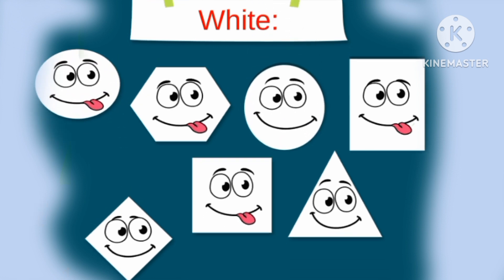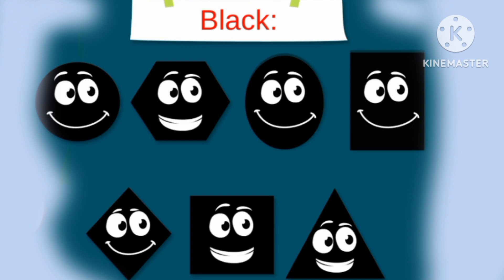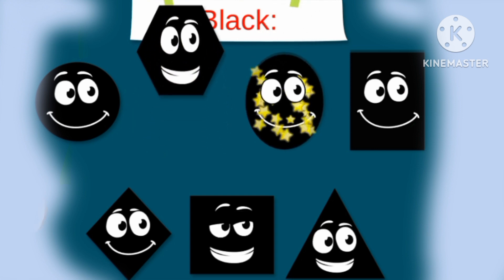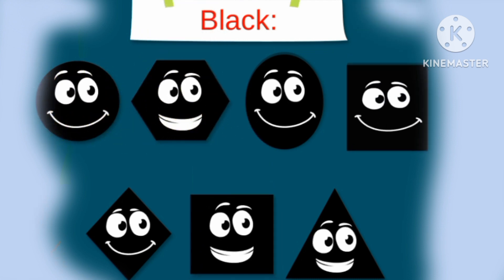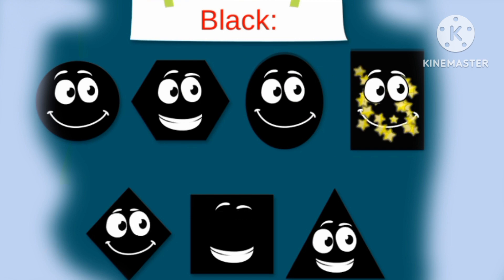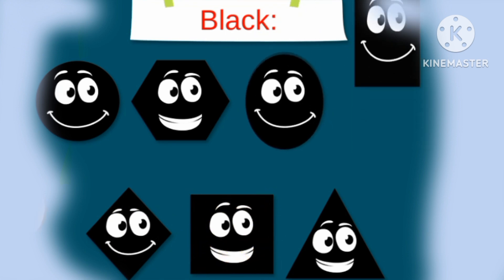W-H-I-T-E. White. Black: black circle, black hexagon, black oval, black rectangle, black triangle, black square, black rhombus. B-L-A-C-K. Black. Circle, hexagon, oval, rectangle, rhombus, square, triangle. Black.